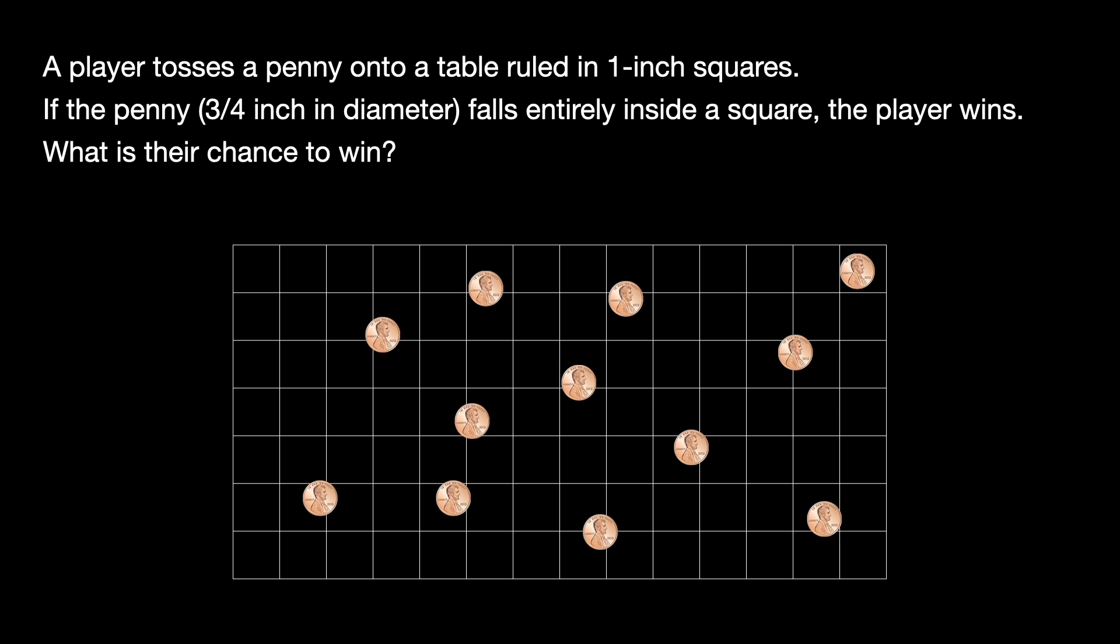However, one key insight we can make is that the edge conditions of the table are quite unlikely. Therefore, if the table is large enough, we can treat the table as infinitely sized, and thus, we can focus on a single square within the grid at a time instead of looking at the grid as a whole. This significantly simplifies the problem for us.